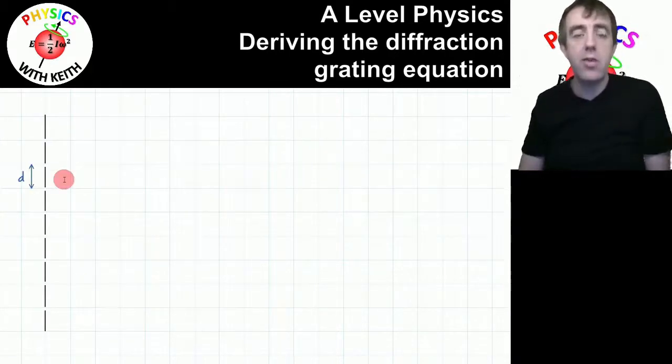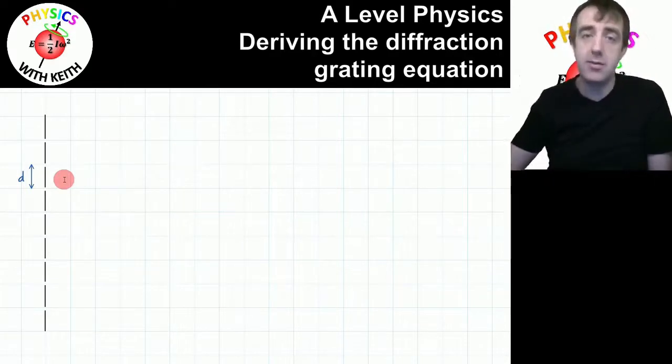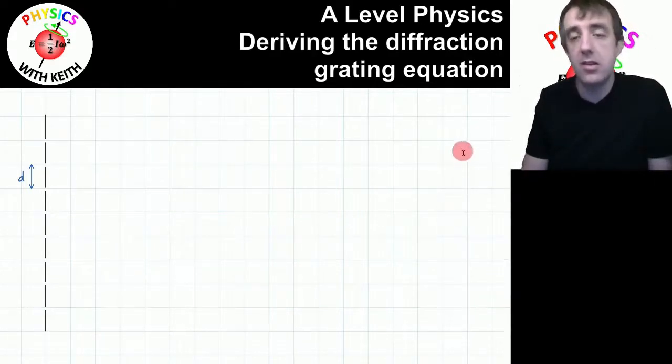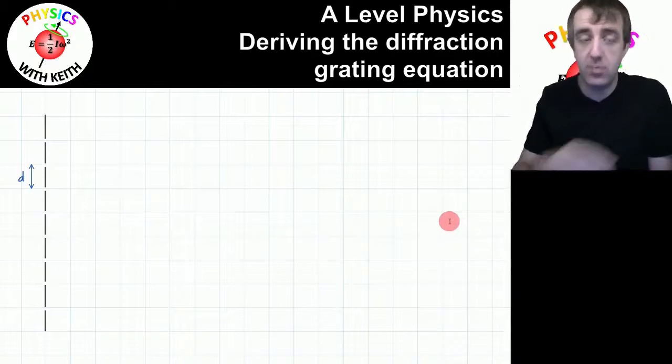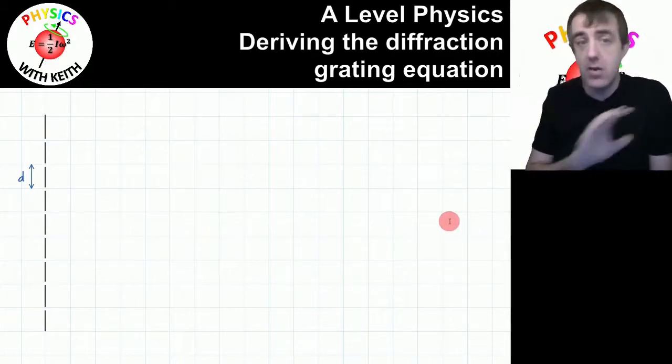Let's say the diffraction grating has slits evenly spaced a distance d apart. And let's assume that the distance to the screen, which is being illuminated with light from that diffraction grating, is very, very far.